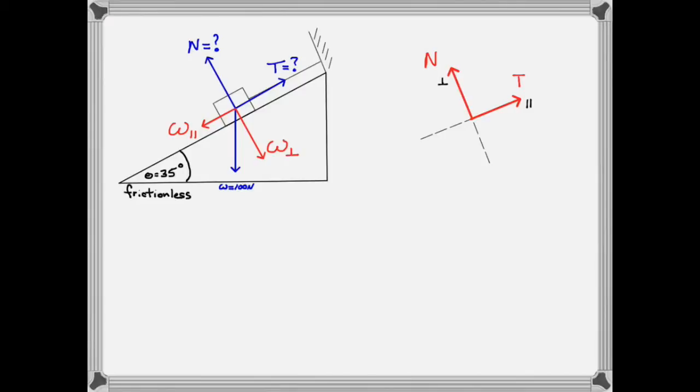You can think of these components conceptually as the parallel component of the weight representing the part of the weight that tends to make the box slide down the plane. The perpendicular component of the weight can be thought of as the part of the weight that holds the box on the plane.